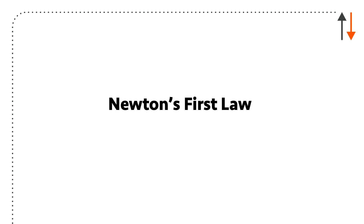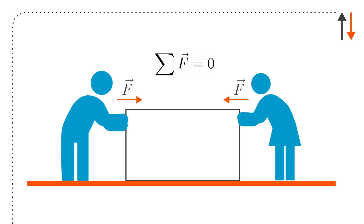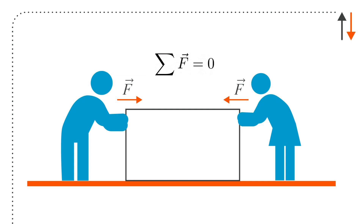The first one we have is Newton's first law: a particle at rest, or moving in a straight line, will remain that way if the resultant force acting on it is zero. So typically you might think about this as a block where two people are pushing on it, both with the same force F in equal and opposite directions, and as a result the block doesn't move.